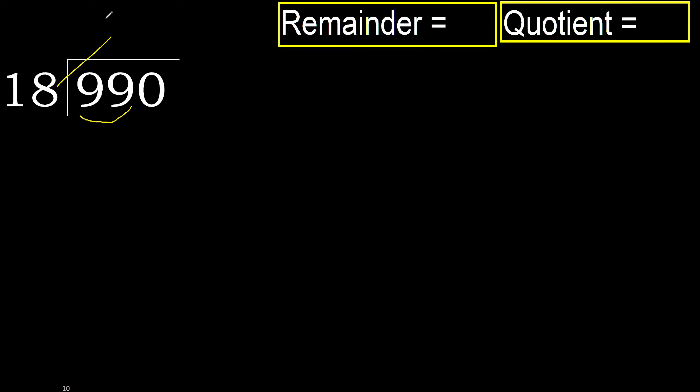18 multiplied by which number is nearest to 99 but not greater? 18 multiplied by 6 is 108, which is greater. 18 multiplied by 5 is 90, which is not greater.